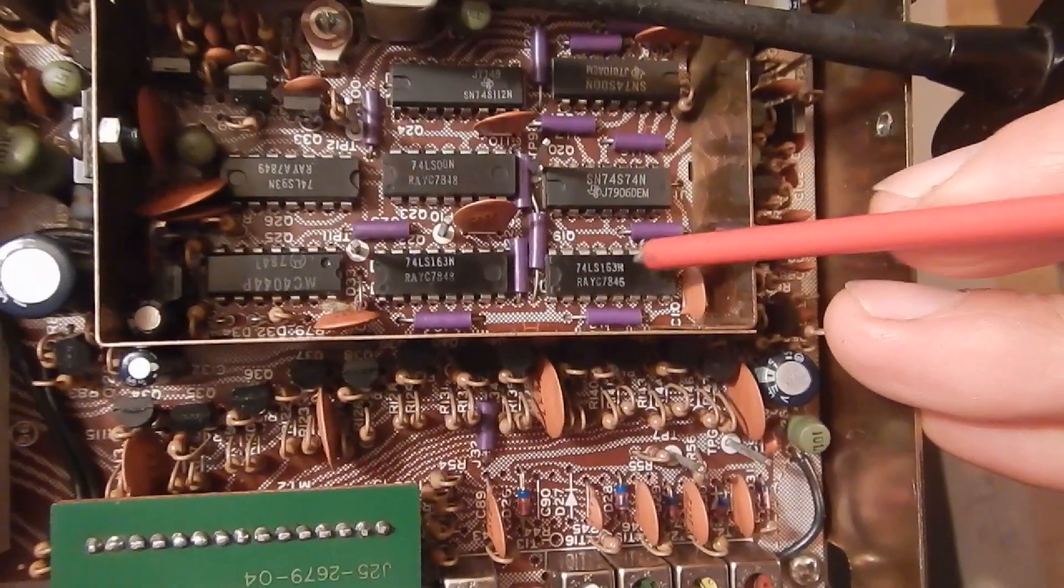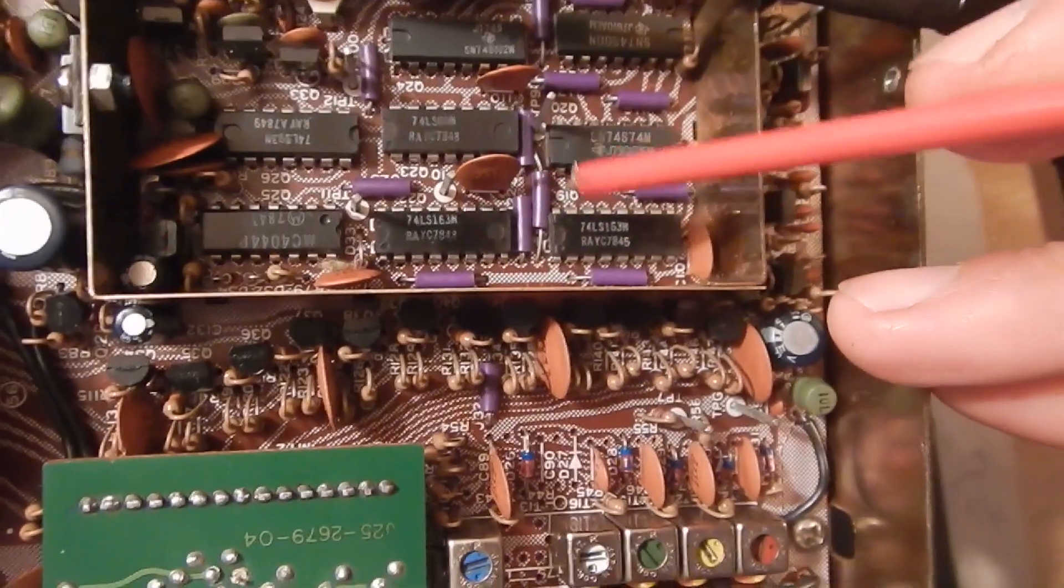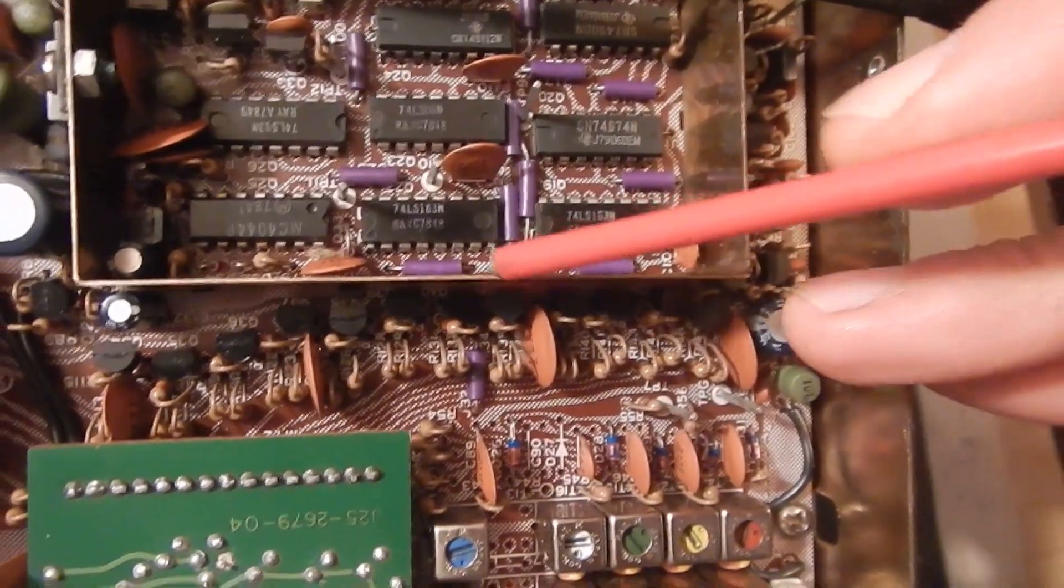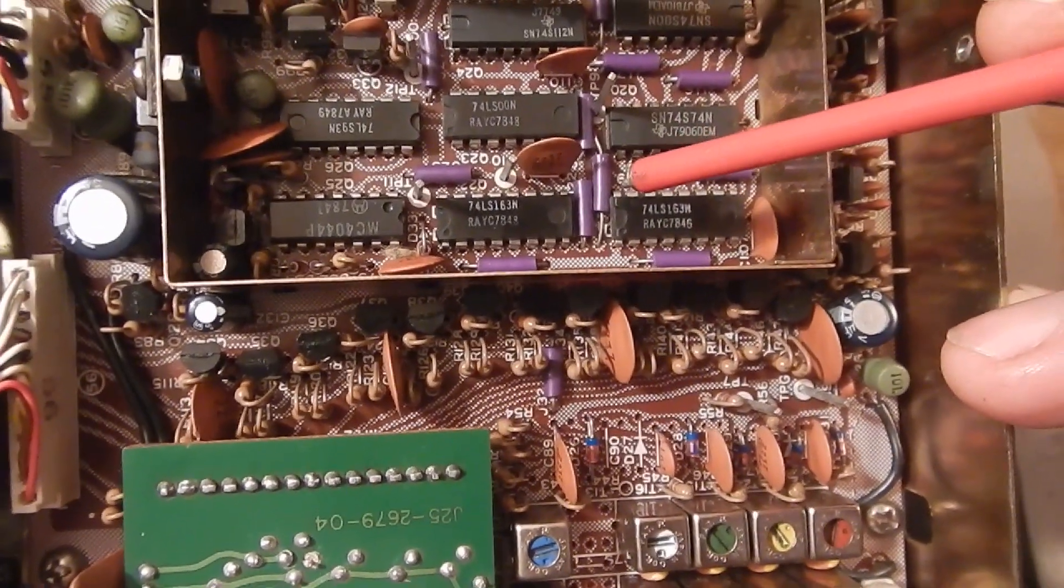So, here we have the two counters, Q19 and Q22. All I'm going to do is check the voltage on pins 3 to 6 on each band with the multimeter.